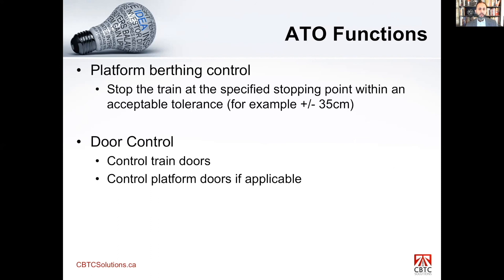Platform berthing and control is the ability to stop a train at the platform. If the station has platform doors, the train must stop within a certain tolerance — typically anywhere between ±20 centimeters to ±50 centimeters. The train comes in, stops within this window, and opens and closes the doors, including the platform doors — that's the door control function. While the ATO doesn't have as many functions as the ATP, it is a very important part of the system because it controls the train and directly affects passengers through the ride quality they experience.